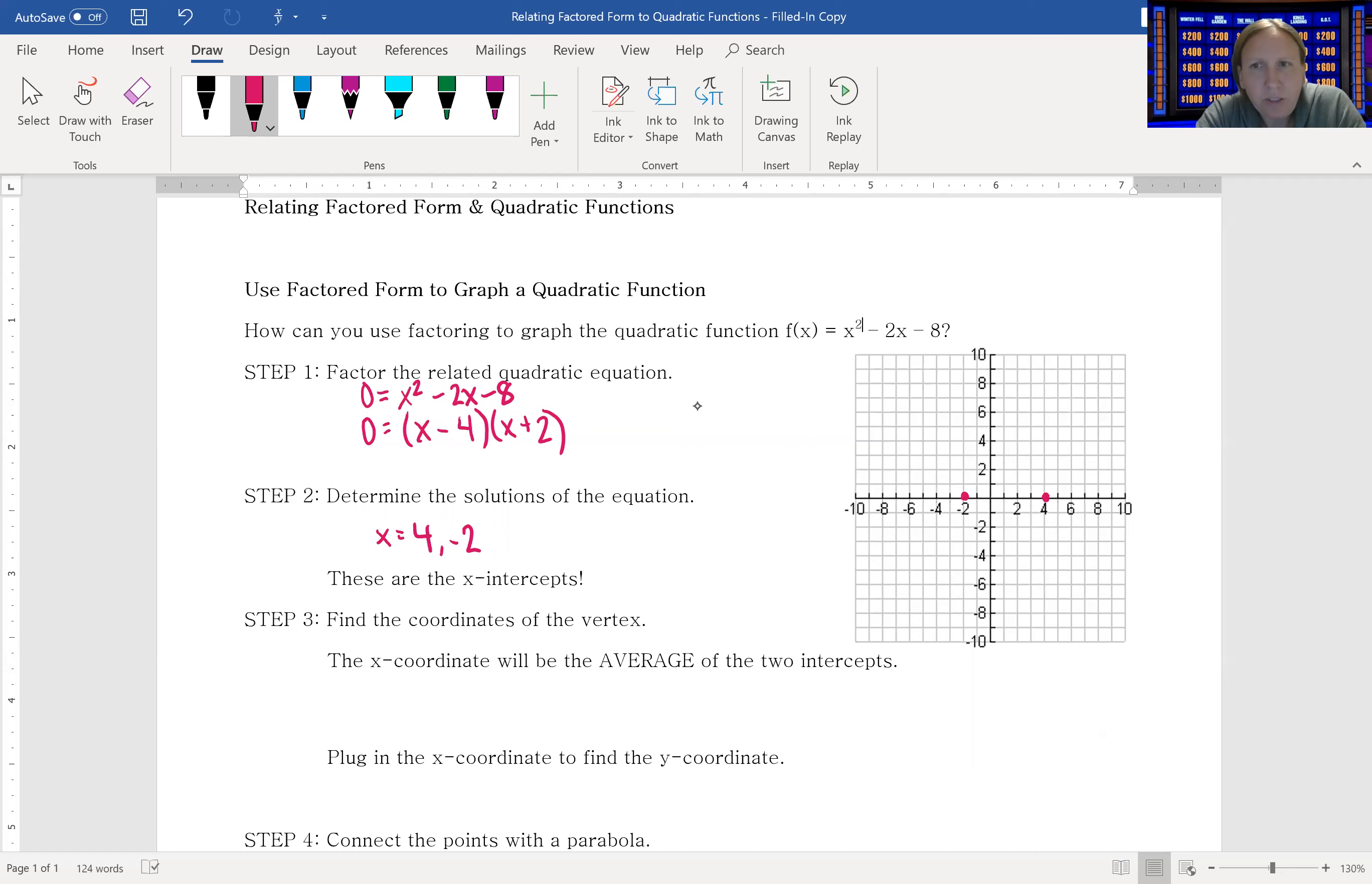However, what you can also do, especially if it's going to end up being a fraction, you can just find the average of the two intercepts. So I can add together -2 and 4, which are my two intercepts.